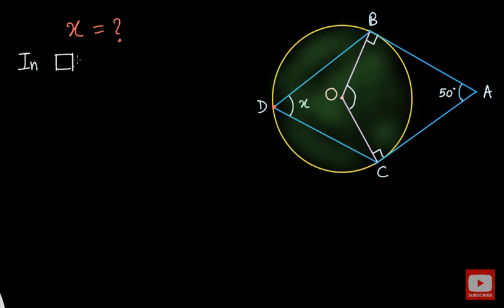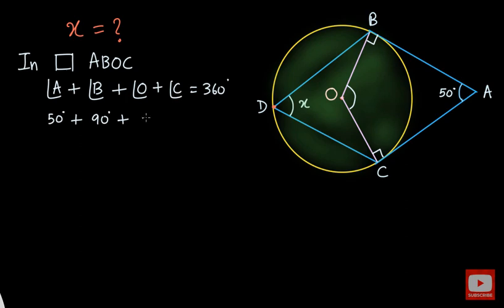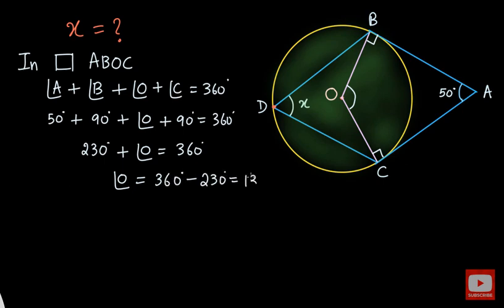In the quadrilateral ABOC, the sum of four angles is 360 degrees. So angle A plus angle B plus angle O plus angle C must be equal to 360 degrees. Angle A is 50 degrees as given. Angle B is 90 degrees. Angle O is what we want to find out. And angle C will be 90 degrees again. 90 plus 90 is 180, 180 plus 50 is 230. So we have 230 degrees plus angle O. From here we get angle O equal to 360 degrees minus 230 degrees which equals 130 degrees. So this central angle is 130 degrees.